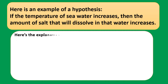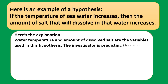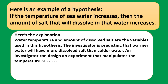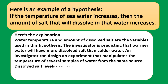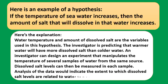Explanation: water temperature and amount of dissolved salt are the variables used in this hypothesis. The investigator is predicting that warmer water will have more dissolved salt than cold water. An investigator can design an experiment that manipulates the temperature of several samples of water from the same source. Dissolved salt levels can then be measured in each sample. Analysis of the data would indicate the extent to which dissolved salt levels are related to water temperature.